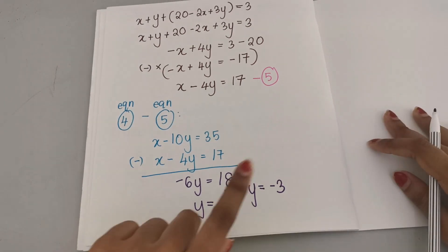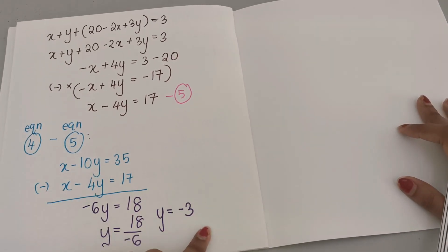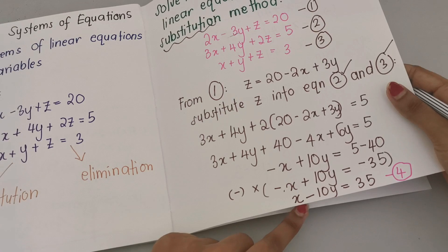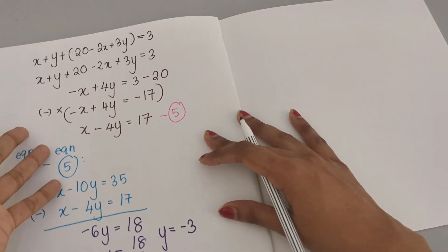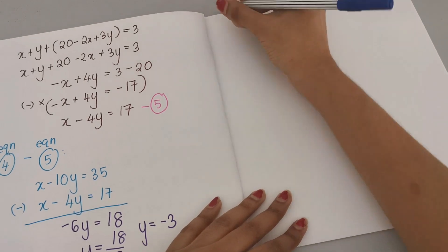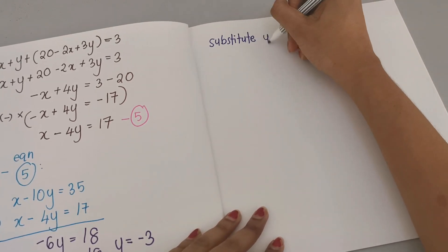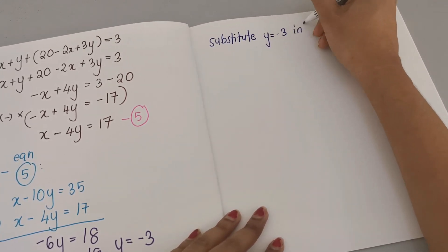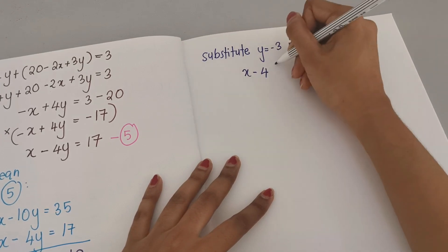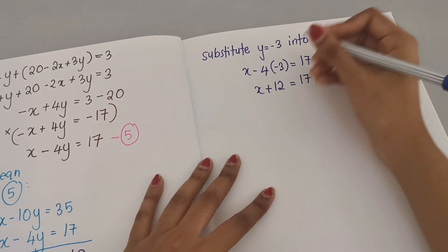Now that we have y, substitute y equals negative 3 into equation 5 to find x. We get x minus 4 times negative 3 equals 17, so x plus 12 equals 17, therefore x equals 5.